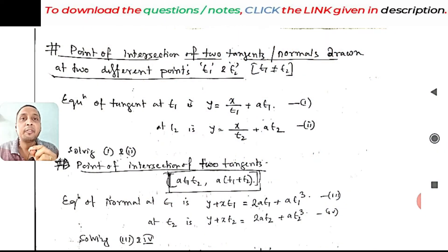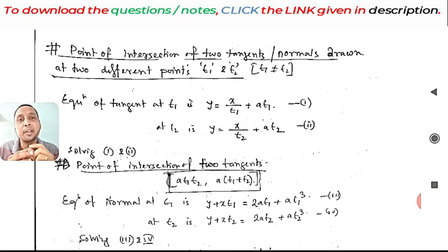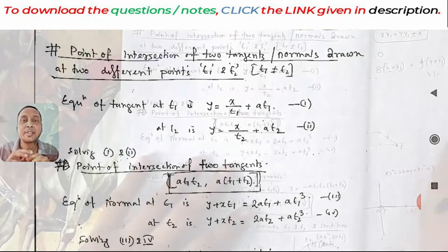So today we will see the point of intersections of the two normals and two tangents that are drawn at the parametric points t1 and t2. Okay then let's see this.